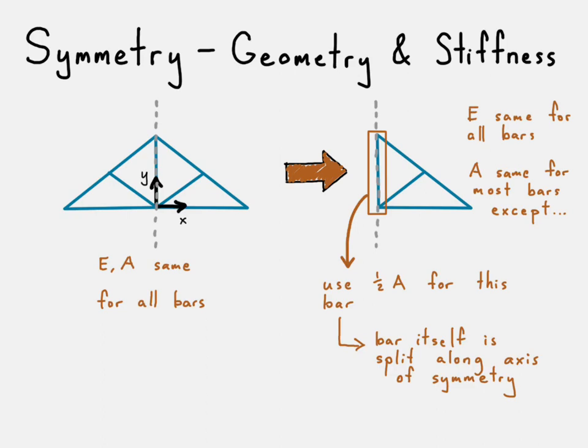So, in this case, we use half of the area because we assume that bar itself is split right down that axis of symmetry. That is the key that we want to take away in case we are doing a symmetric problem and there happens to be a bar lying right along that axis of symmetry.